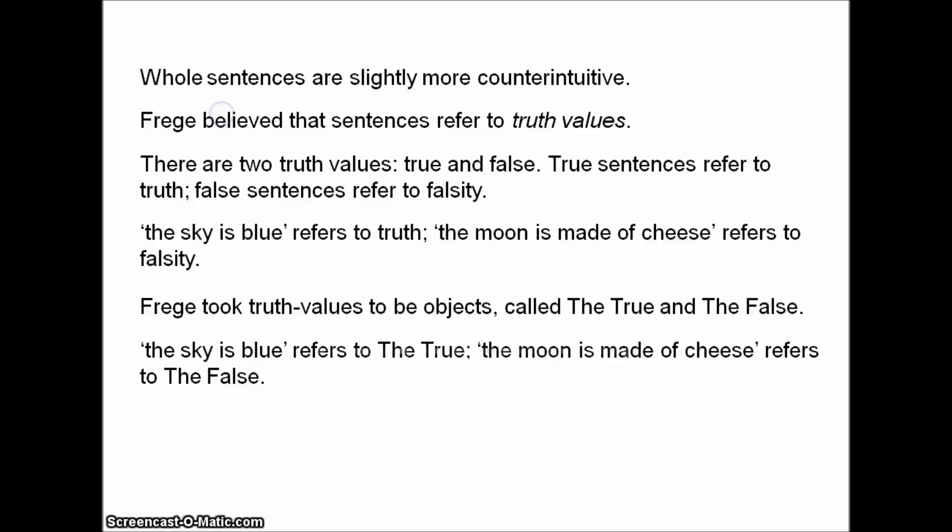More precisely, Frege took both truth and falsity to be objects, which he called the True and the False. So 'the sky is blue' refers to the object the True, and 'the moon is made of cheese' refers to the object the False. Of course, it is odd to think of truth values as objects, and it's also a bit odd to think that every true sentence and every false sentence refers to the same thing — for any whole sentence, there are only two things it can refer to.